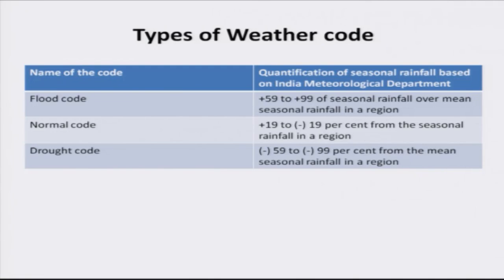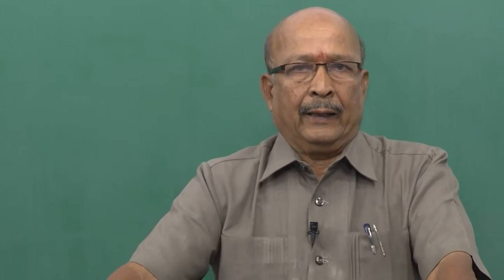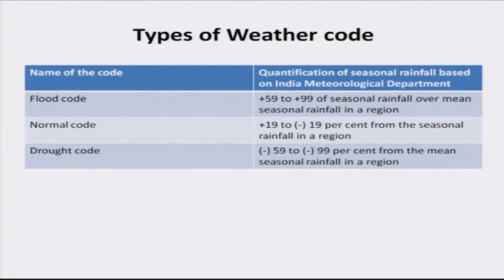There are three weather codes as proposed by Professor Swaminathan: flood code, normal code, and drought code. These codes have been identified and given boundaries by the India Meteorological Department. For every area there is a mean rainfall, and if there is a variation from the mean, the code changes. For normal weather code, the variation is from plus 19 to minus 19 percent from the seasonal mean rainfall. The crop production would be very normal.